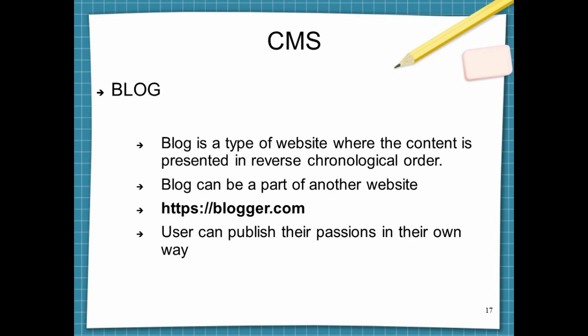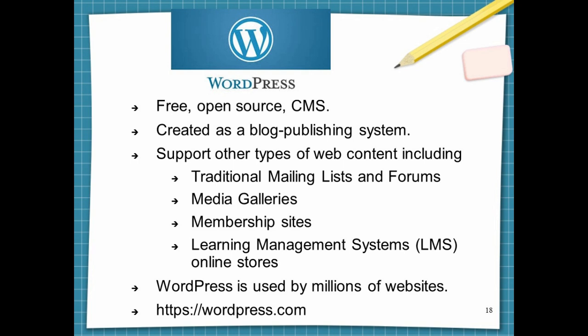A blog is a type of website where the content is presented in reverse chronological order. Blogs can be part of another website, and users can publish their passions in their own way. You can have a look at blogger.com for details. WordPress is a free, open source CMS created as a blog publishing system. It supports other types of web content including traditional mailing lists and forums, media galleries, membership sites, learning management systems, and online stores.